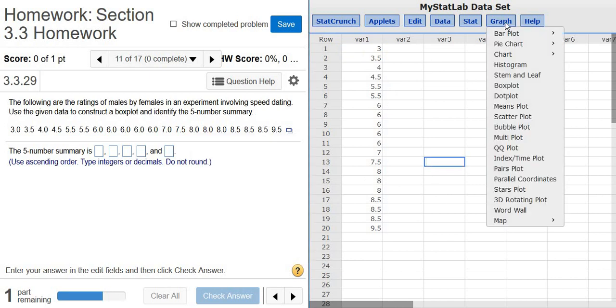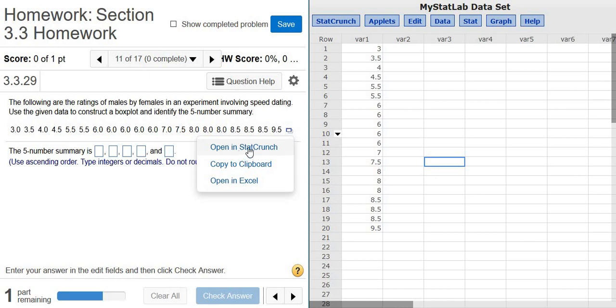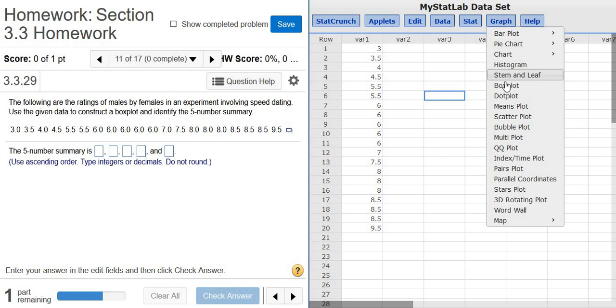Then you go to Graph and Box Plot. So again, first step, you left-click this, click Open in StatCrunch. You should get a window like this, and then you go to Graph and Box Plot.